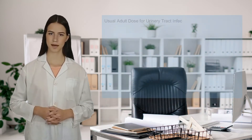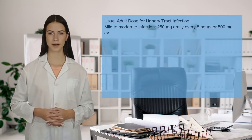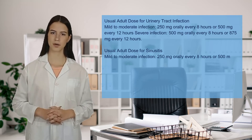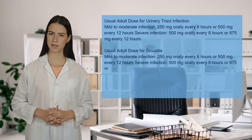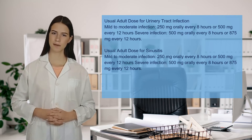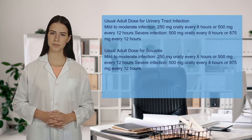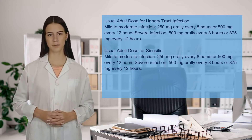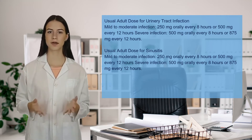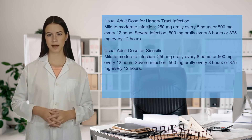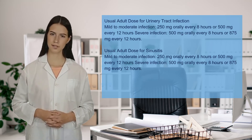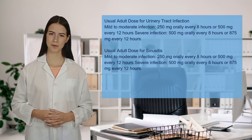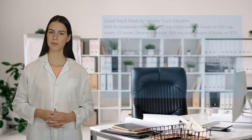Usual adult dose for urinary tract infection. Mild to moderate infection: 250 mg orally every 8 hours or 500 mg every 12 hours. Severe infection: 500 mg orally every 8 hours or 875 mg every 12 hours. Usual adult dose for sinusitis. Mild to moderate infection: 250 mg orally every 8 hours or 500 mg every 12 hours. Severe infection: 500 mg orally every 8 hours or 875 mg every 12 hours.